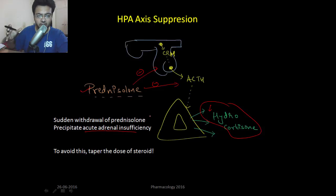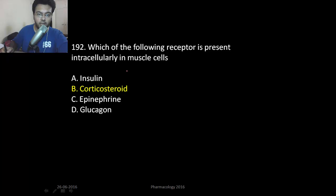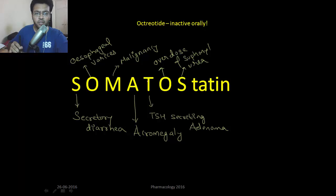Tapering is done to prevent acute adrenal insufficiency. Any patient receiving greater than 5 mg of prednisolone will have adrenal suppression. Also, note that the receptors for steroids are located inside the cell.